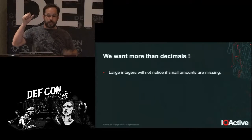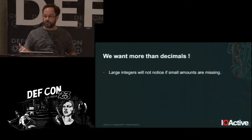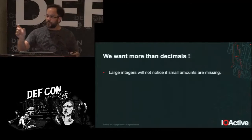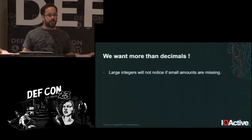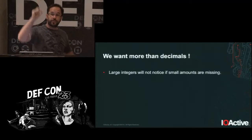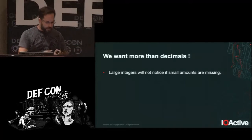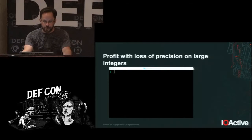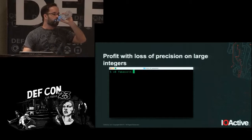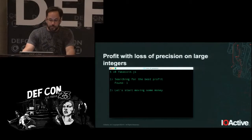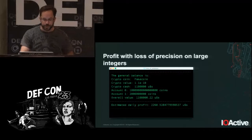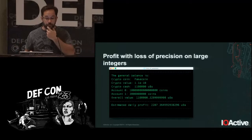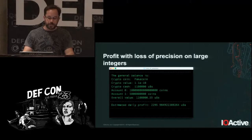I created a fake cryptocurrency called FakeCoin with a very small per-coin value. I bought 10^17 of these coins, with a total net value of $1,100,000, and transferred one coin at a time to a secondary profit account. The minimum transfer gives a daily profit of $2,300. If you add a zero to the number of coins, you add a zero to the daily profit as well.